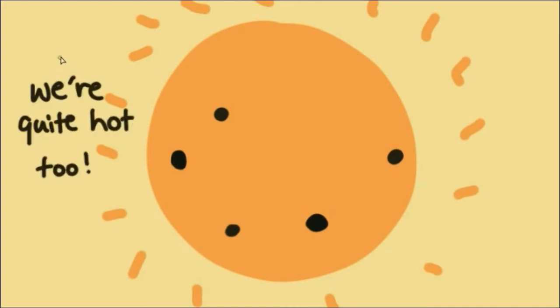Sunspots are dark planet-sized regions found over the surface of the sun. They appear dark because they are colder than the areas surrounding them, but by no means mistake these sunspots were cold. They're really, really, and I mean really hot.